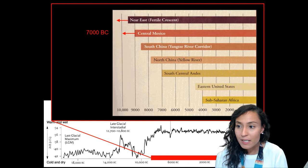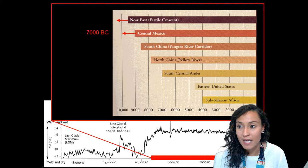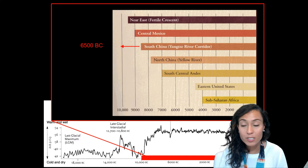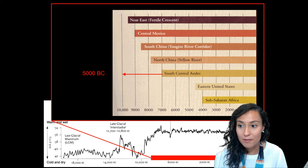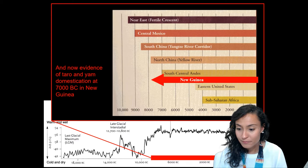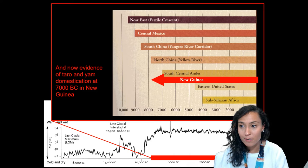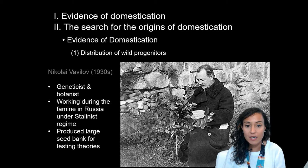Following the development of agriculture in the Near East, we see the appearance of domestication in central Mexico around 7,000 B.C., then in China particularly along the Yangtze River by roughly 6,500 B.C., followed by evidence in South America and the eastern United States. Recent evidence has also shown much earlier domestication of taro and yam in Papua New Guinea than had ever been imagined before.